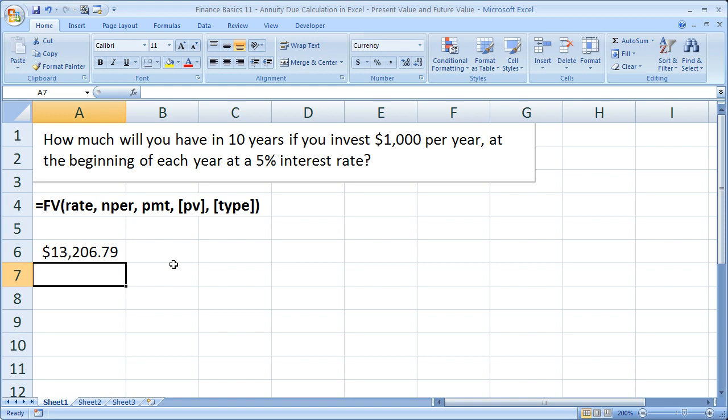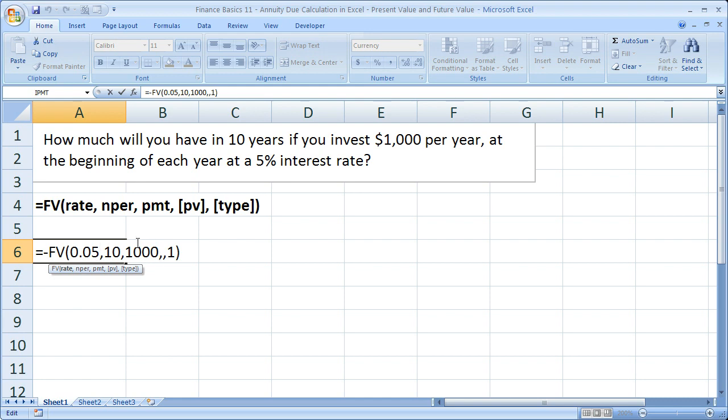So that's how you do that with the future value function. I'll leave it here just for a second. We have the rate right here, number of periods, payment. The most important part is the one at the very end—that is the type argument that tells it it's going to be an annuity due.